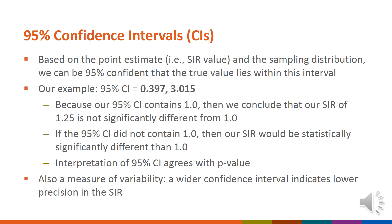Let's look at an example. Our hospital's SSI-SIR was 1.25. After reviewing the NHSN SIR report, we noted that the 95% confidence interval ranges from 0.397 to 3.015. Because this interval includes the value of 1, we conclude that our SIR is not significantly different than 1. If the 95% interval did not contain the value of 1, we would conclude that the SIR was significantly different than 1.